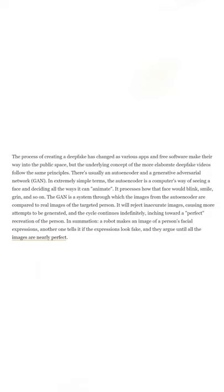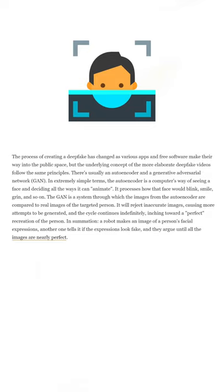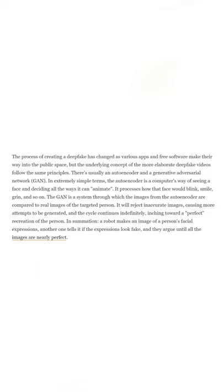The GAN is a system through which the images from the autoencoder are compared to real images of the target person. It will reject inaccurate images, causing more attempts to be generated, and the cycle continues indefinitely, inching toward a perfect recreation of the person. In summation: a robot makes an image of a person's facial expressions, another one judges if the expressions look fake, and they argue until the images are literally perfect.